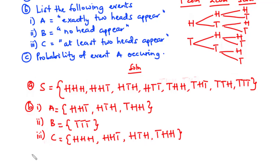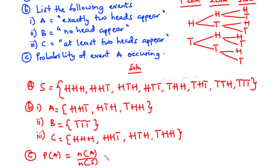For part C, we find the probability of event A occurring. P(A) = number of outcomes in event A divided by total number of outcomes in the sample space. Set A has 3 elements, and the sample space has 8 elements. Therefore, P(A) = 3/8.